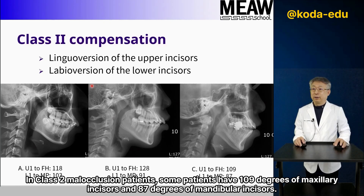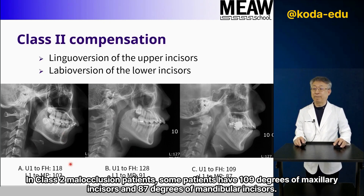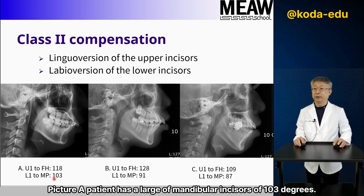In Class 2 malocclusion patients, some patients have 109 degrees of maxillary incisors and 87 degrees of mandibular incisors. Another patient example has a large mandibular incisor angle of 103 degrees.